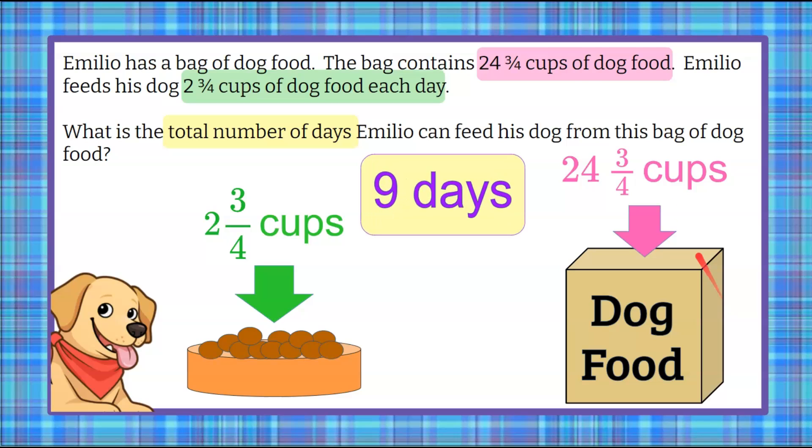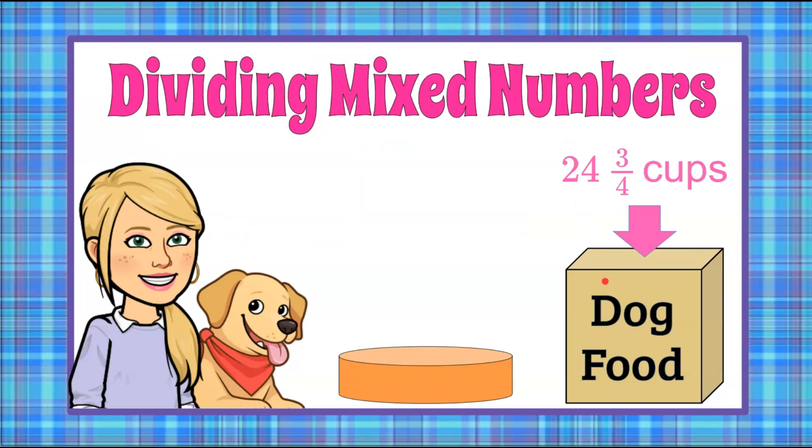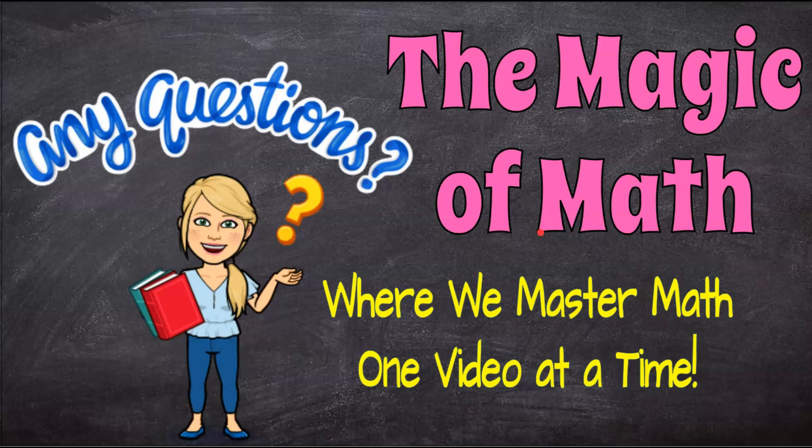And there you have it. That is 9 days to feed our dog 2 and 3/4 cups of dog food each day from a bag containing 24 and 3/4 cups. Total days of 9 days in this bag. That's how we divide mixed numbers. We're going to use visual models and numerical equations to solve real-world problems. That's the magic of math, where we continue to master math one video at a time. Thanks for joining me today and I hope you come back soon.